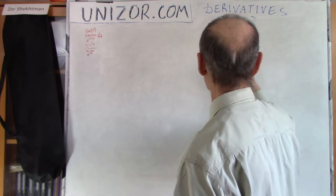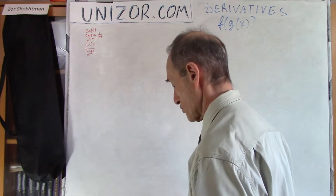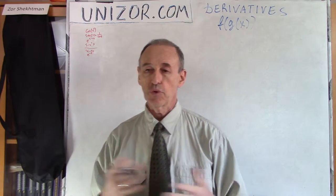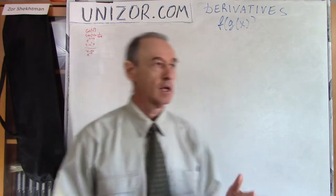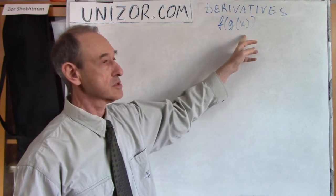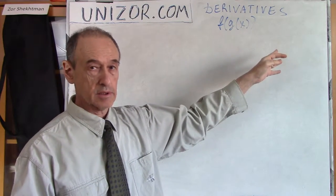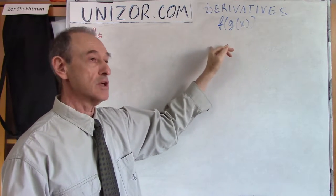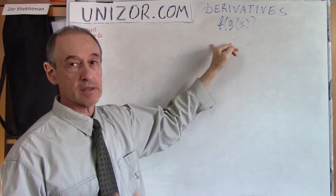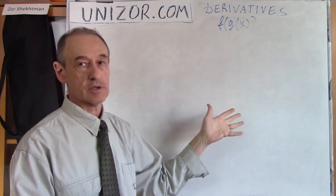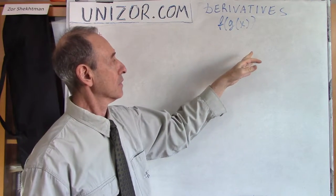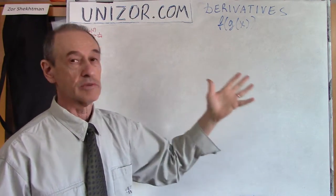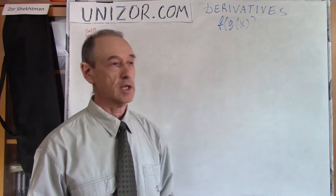So, we are talking about the derivative of this function. First of all, obviously, we have to talk about domain. So, g is supposed to be defined in a certain domain, and its values are supposed to be within the domain of function f. Otherwise, we will not be able to calculate what the value of f is for any particular x.